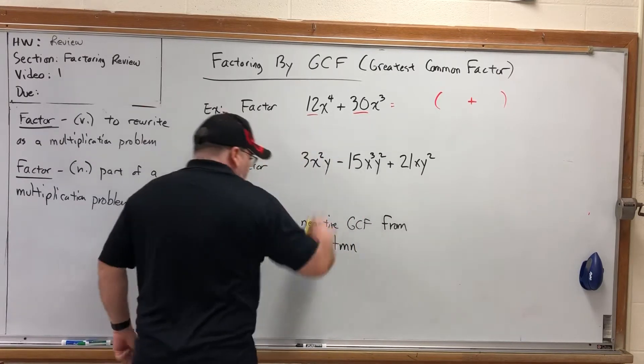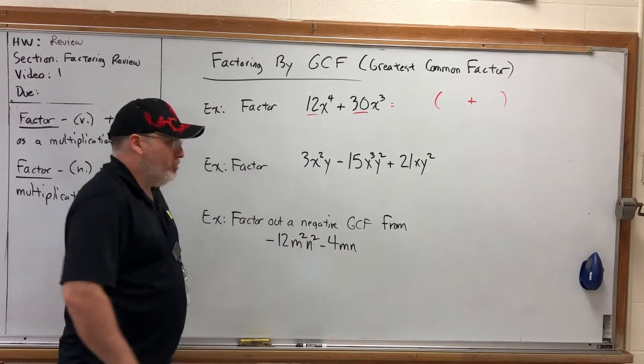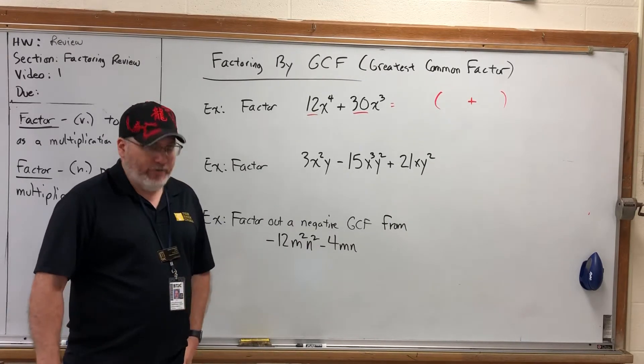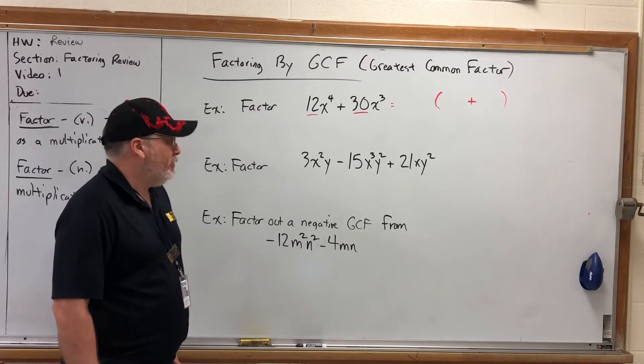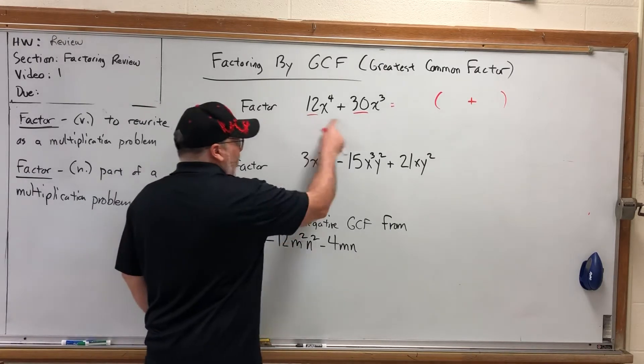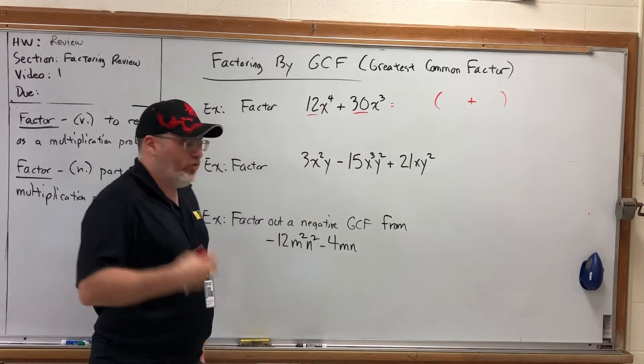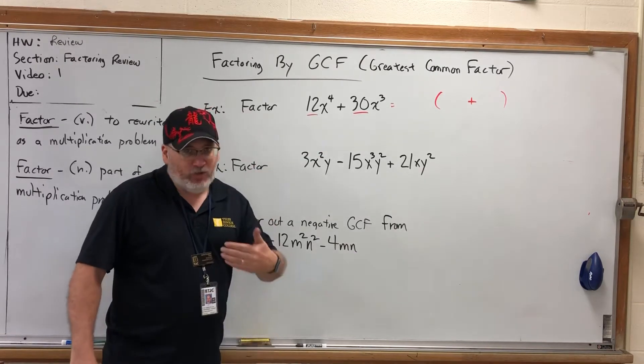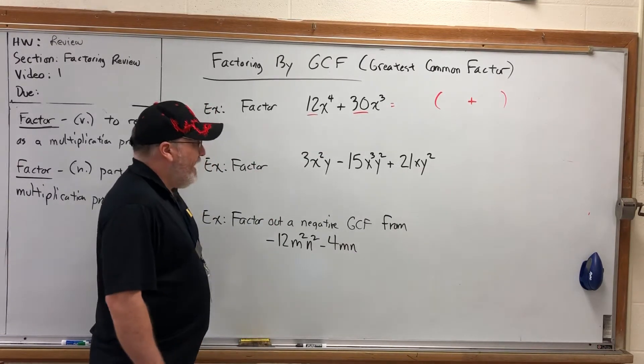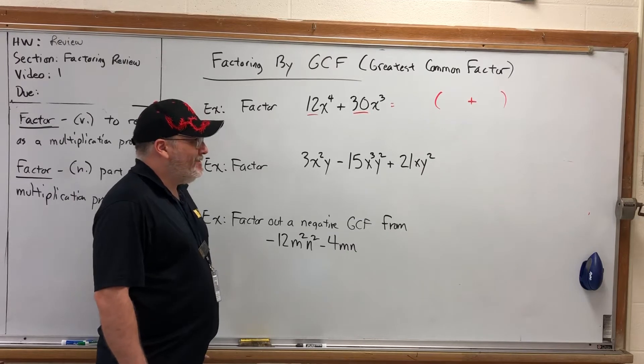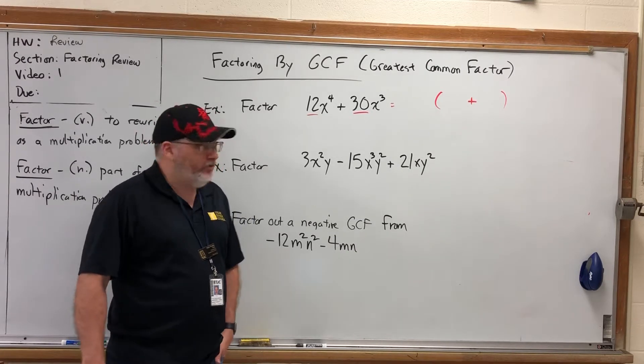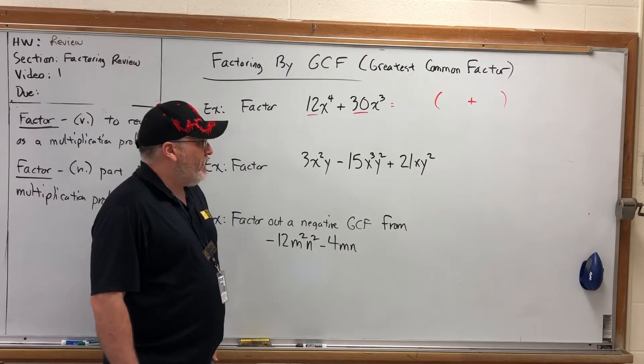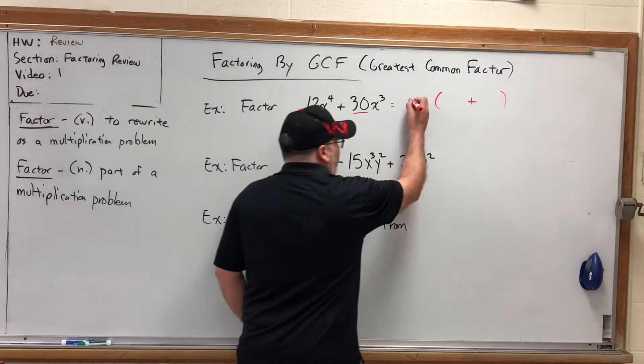When you're factoring out a greatest common factor, the first thing you do is look at the coefficients and ask yourself, what is the greatest number that will divide into both of them? For example, I can divide both of these by two, but there's a greater number than that. I can divide both of them by three, but there's an even greater number than that. I can divide both of them by six. And that is the greatest number that will divide into both 12 and 30 evenly. So the greatest common factor of 12 and 30 is six.